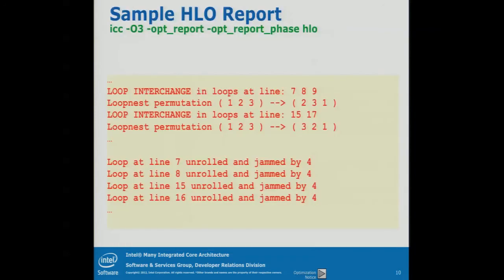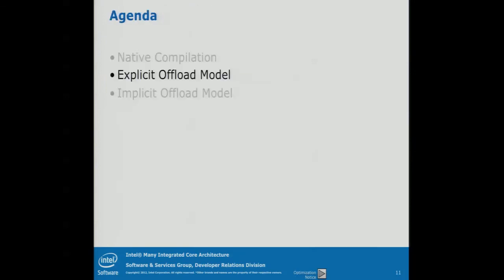You should turn on those features to see if the hot spot of the application — the part of the program that consumes most of the runtime — is actually optimized well for a particular platform. For example, the report tells you that a loop has been unrolled and jammed by a factor of four, or that this loop has been vectorized. That's about it for the compiler.